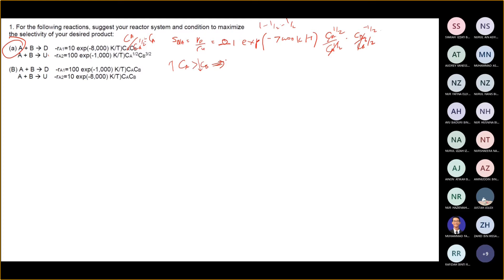So what kind of reactor is suitable? CSTR. Yes. So there are three ways. Either you use a semi-batch reactor, whereby B is fed slowly.